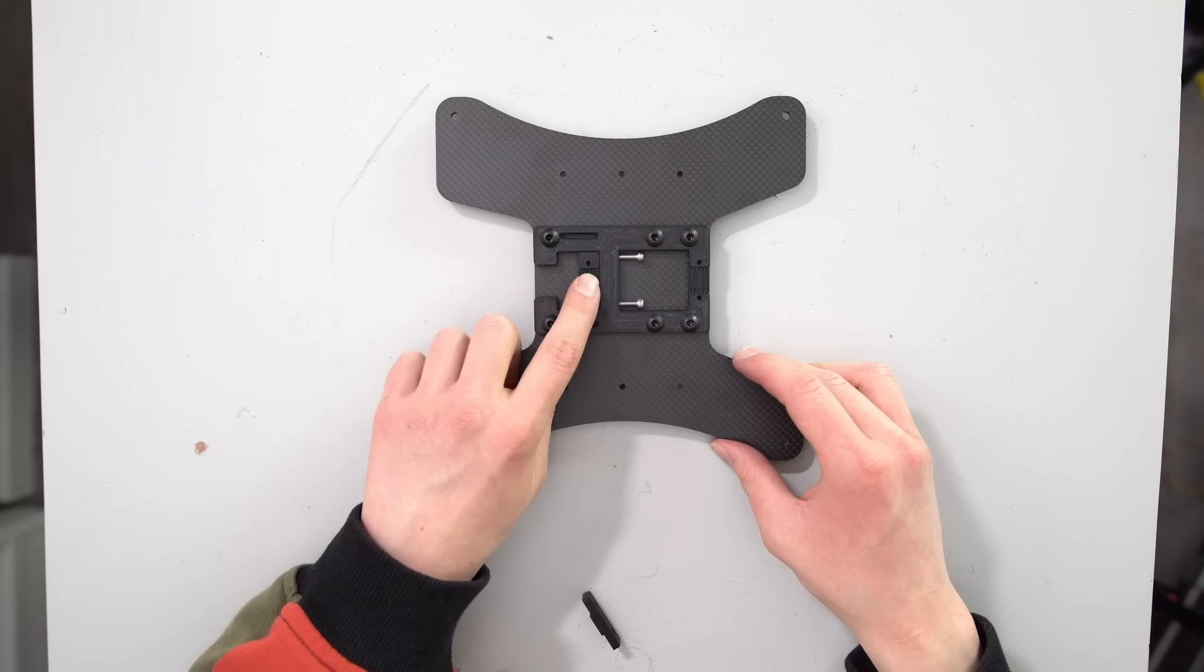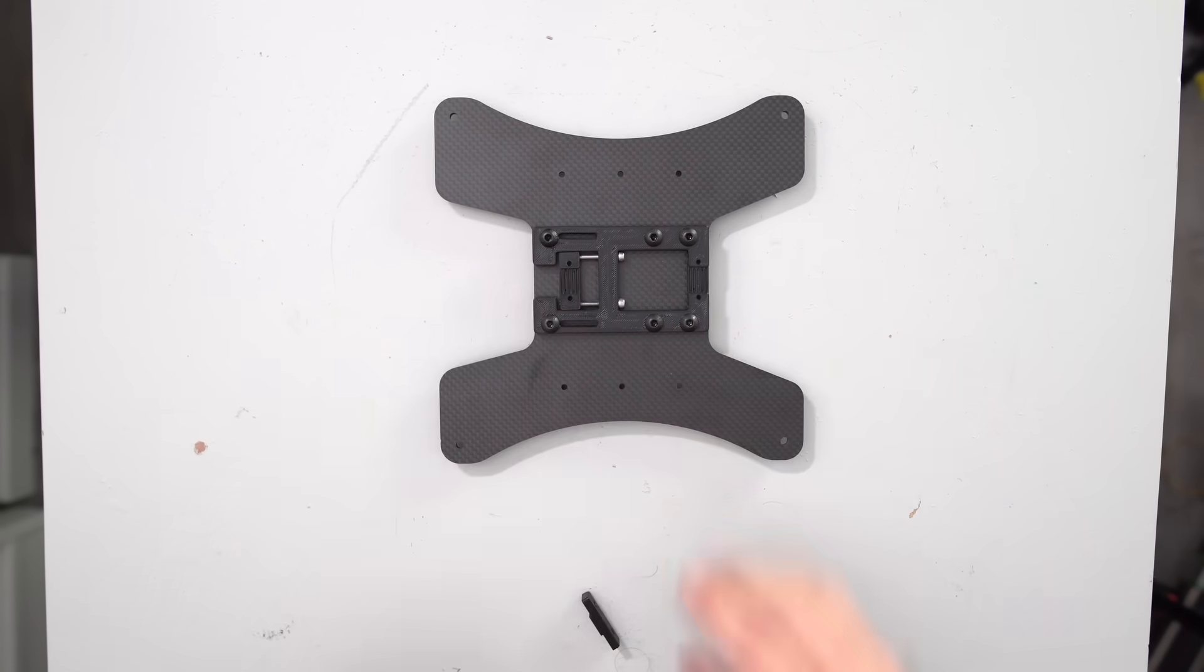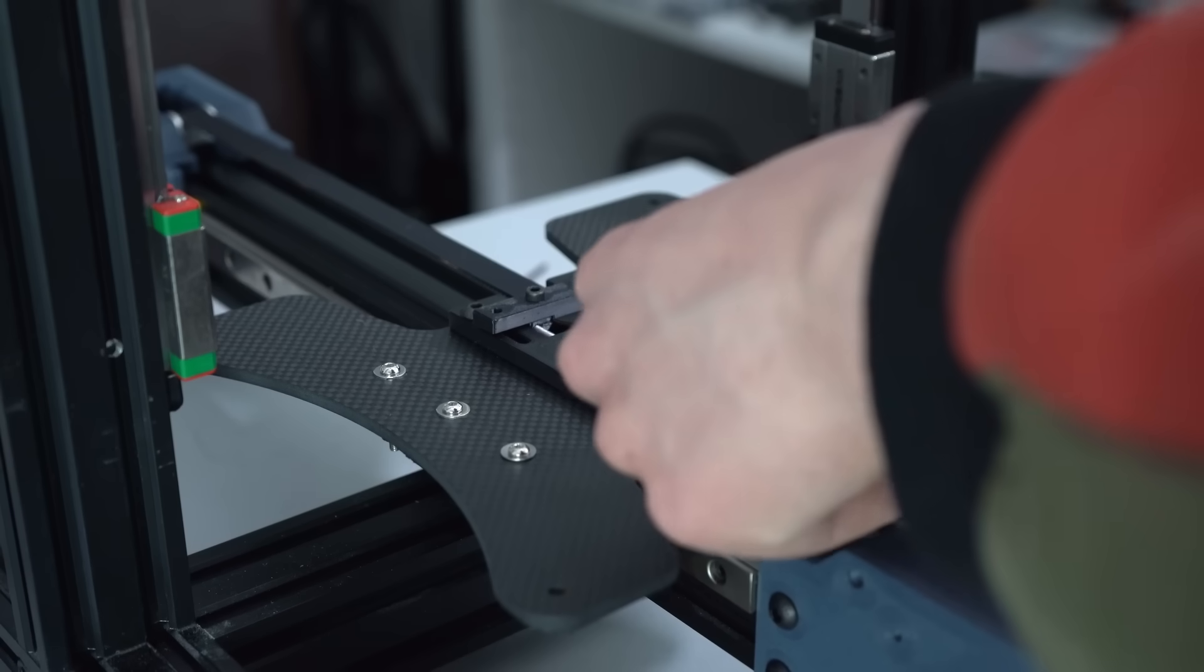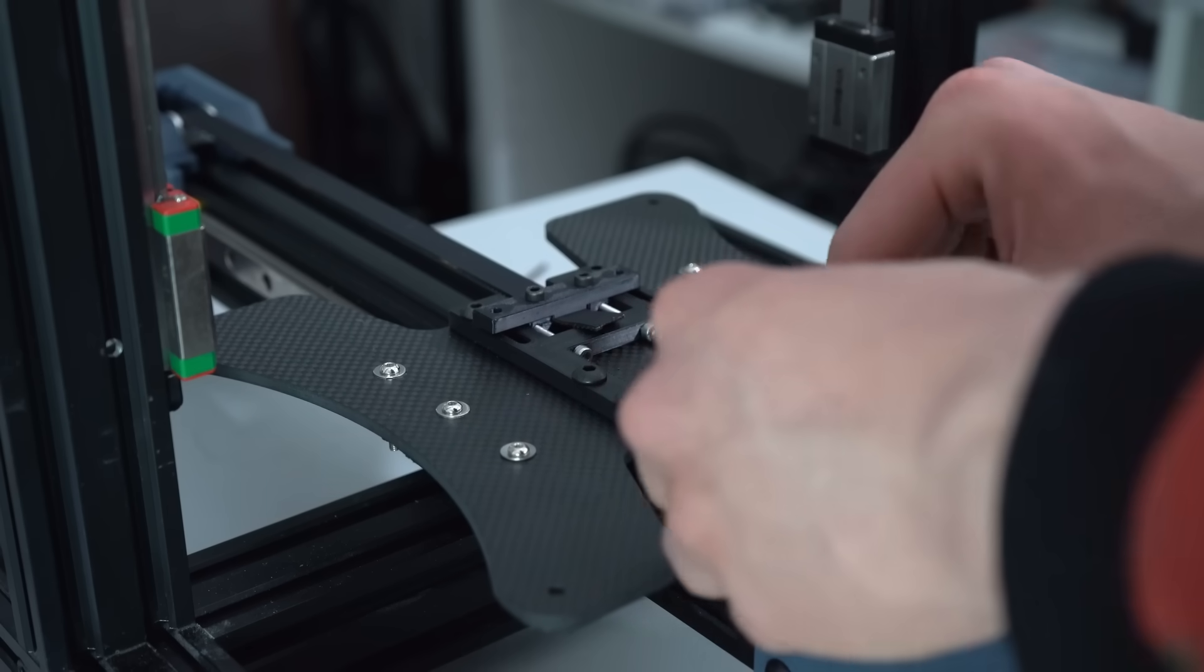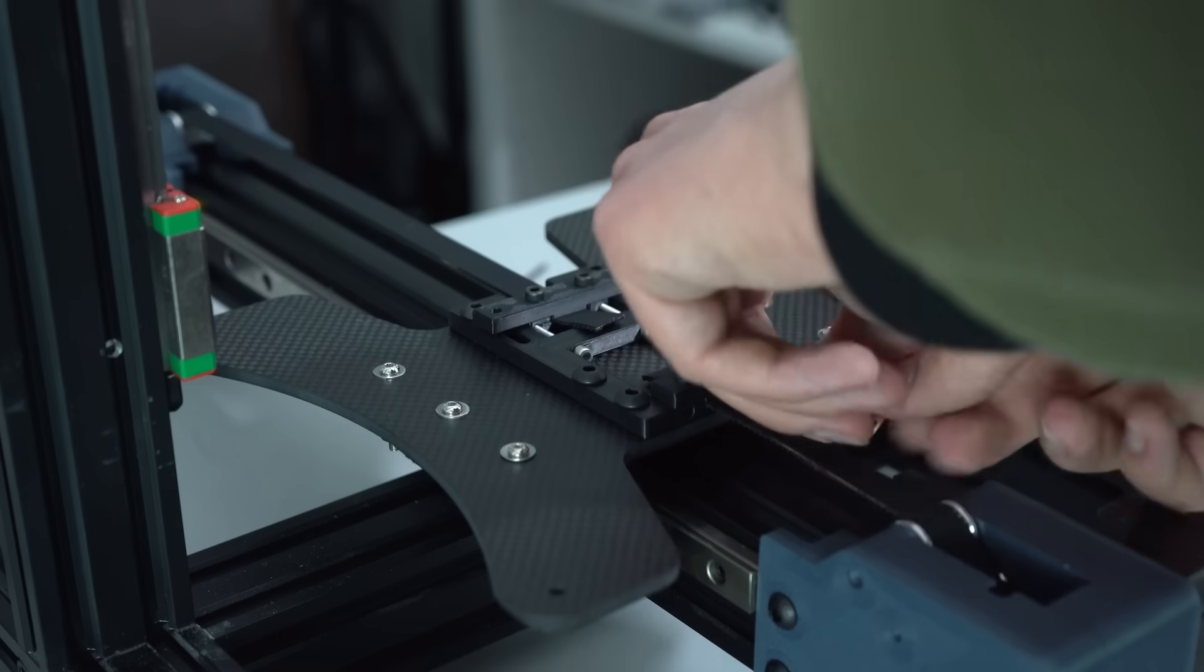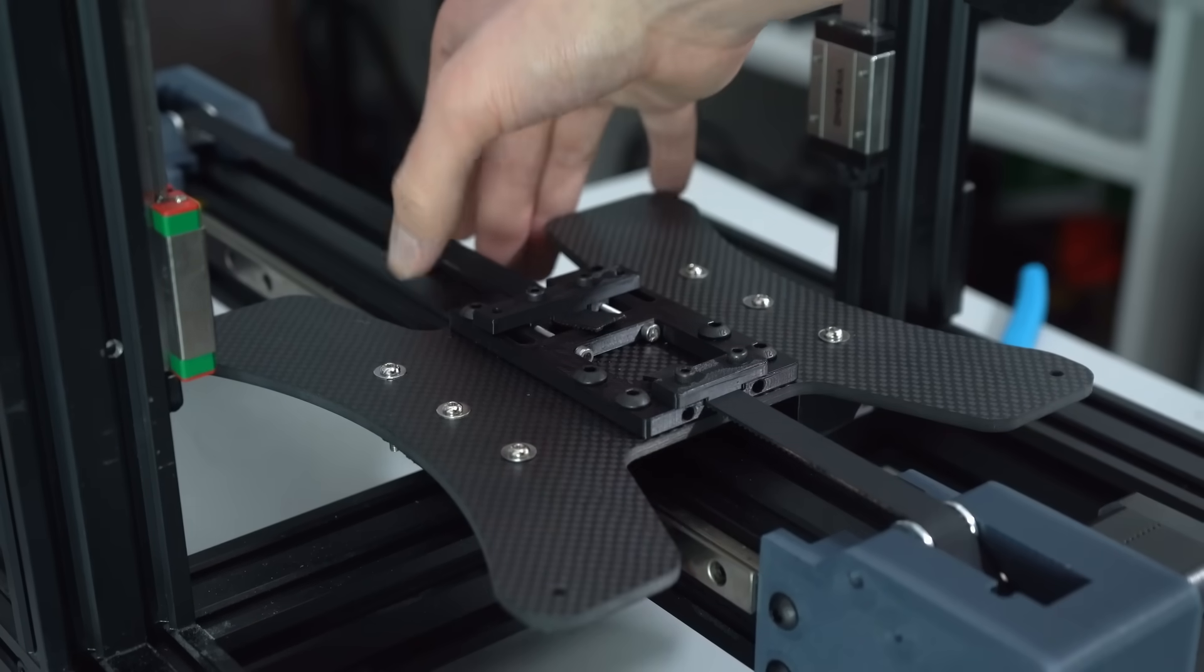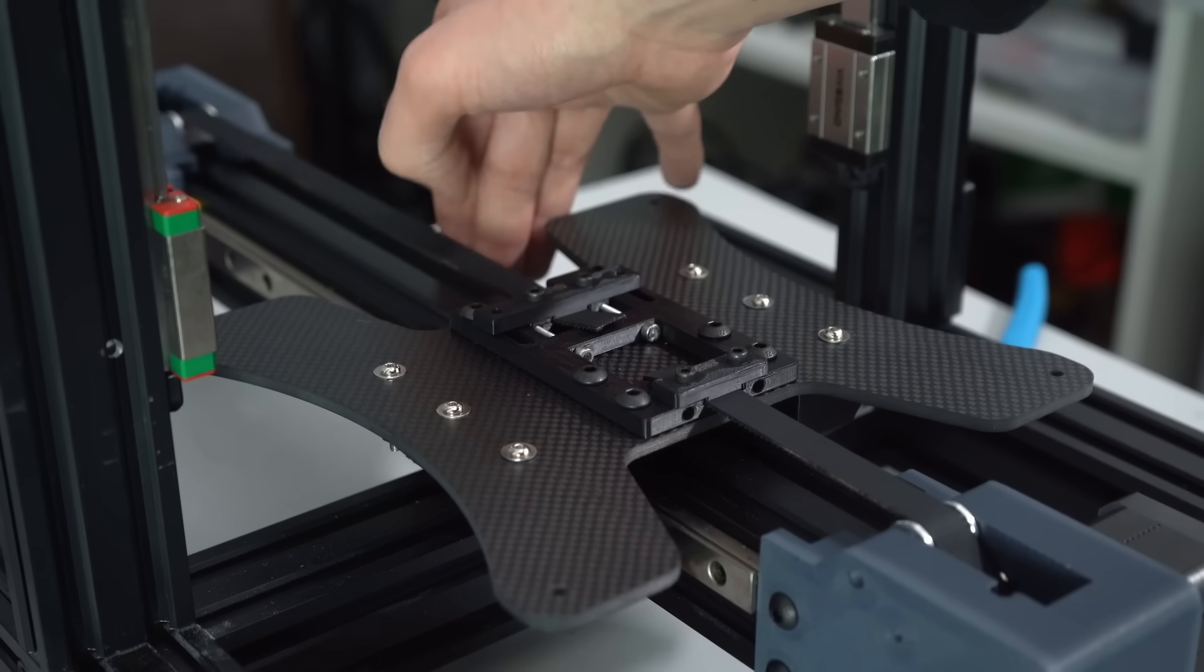One thing we didn't talk about just yet was belt attachment and belt tensioning. For that, I designed a little piece that sits between the carriage and the bed itself. One side clamps the belts into place, and on the other side we have a tensioning mechanism. With a long enough hex key, we should be able to tension the belts even when the bed is installed on top, and that's thanks to these access holes in the back. I'm quite proud of how this all turned out, but only time will tell if it actually works.